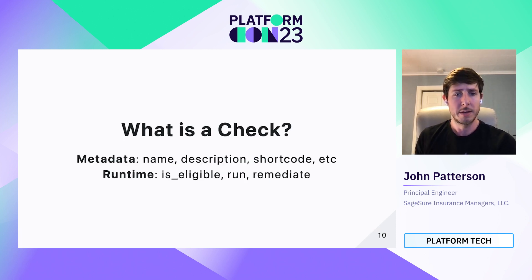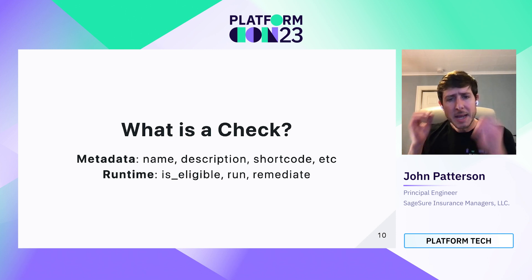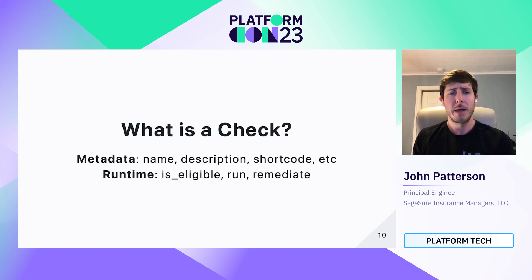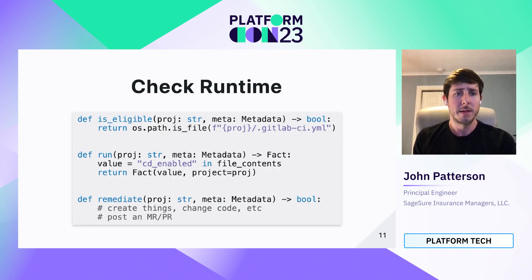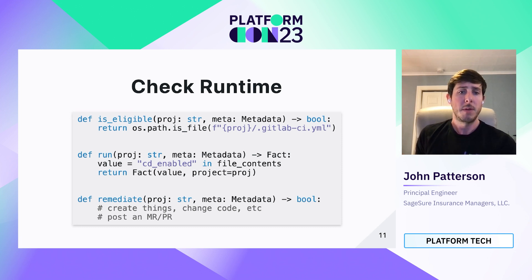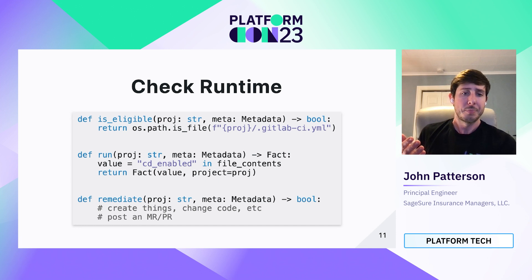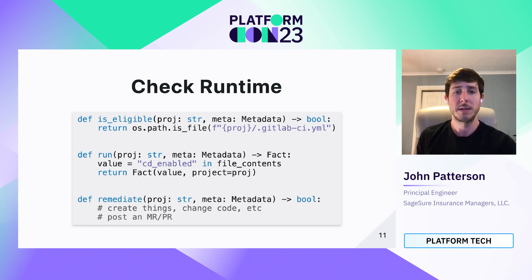A little bit more about a check. It's just made up of metadata — the name of the check, the description, and a short code as an easy way to refer to it. Then there are the runtime components: the methods is_eligible, run, and remediate. The is_eligible method tests to see if a check should be run against the project — it returns true if the run method should be executed, and false if not. In this case, we're checking for a GitLab CI YAML file at the root of the project repo. The run method is responsible for generating our fact value — here it's checking to see if CD_enabled is found inside the file contents.